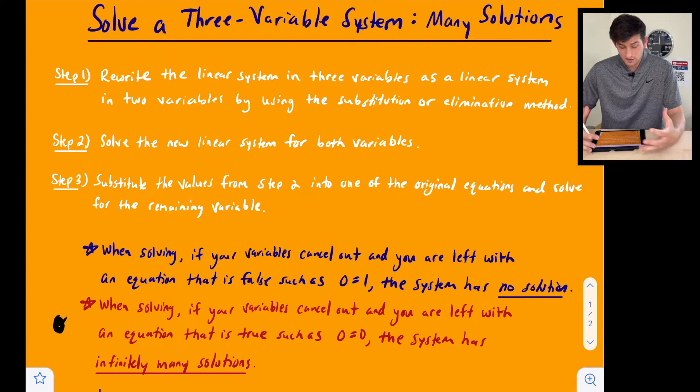Now in a previous video, we talked about no solution and that's when our variables canceled out and we got zero is equal to one or something that is not true.